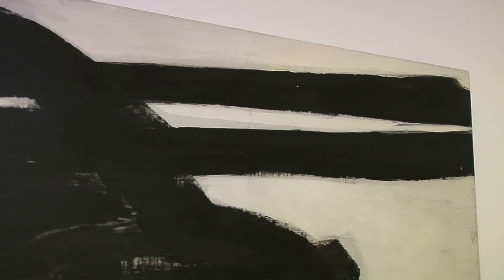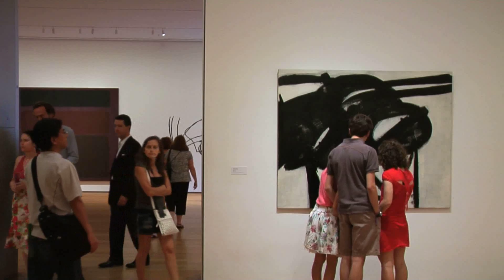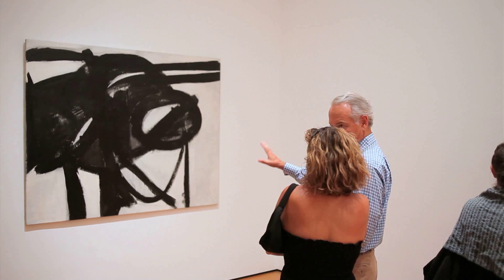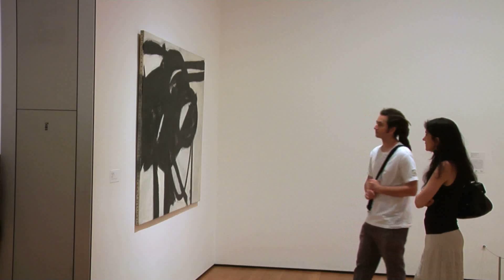Looking at Franz Kline's painting called Chief from 1950, you might be surprised to learn that just two years prior to the making of this painting, Kline spent most of his time in the studio making figurative drawings and paintings of things like furniture, chairs for example.